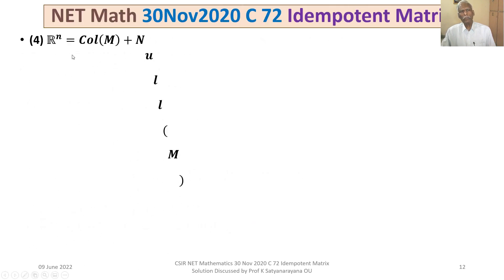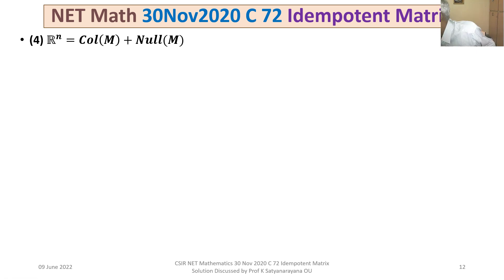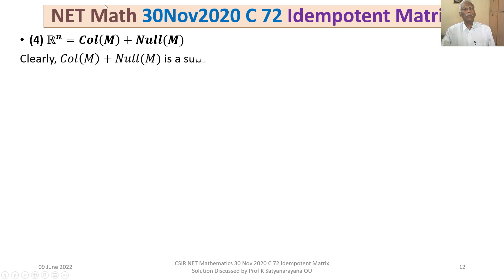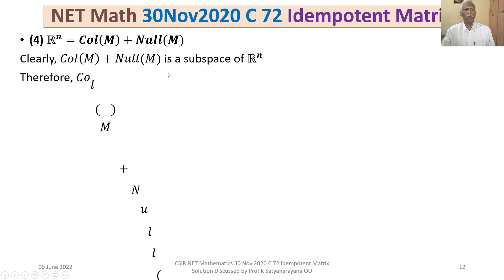Now for Option 4: we claim ℝⁿ = col(M) + null(M). We already know col(M) and null(M) are subspaces of ℝⁿ, so their sum is also a subspace of ℝⁿ, and hence col(M) + null(M) ⊆ ℝⁿ.